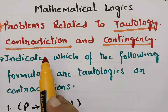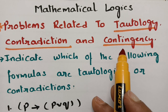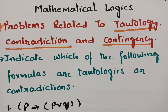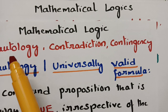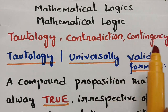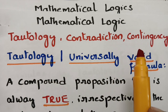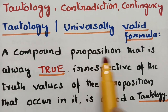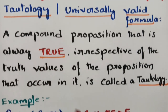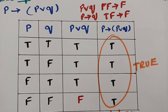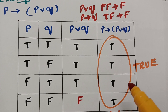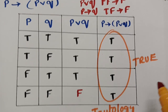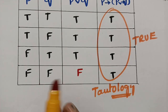So what is tautology, contradiction and contingency? I am going to solve the problems related to these topics. First of all I would like to recap the main points. In my previous video I said that a tautology is a compound proposition that is always true. If the last end of the statement is always true, then it is said to be a tautology.